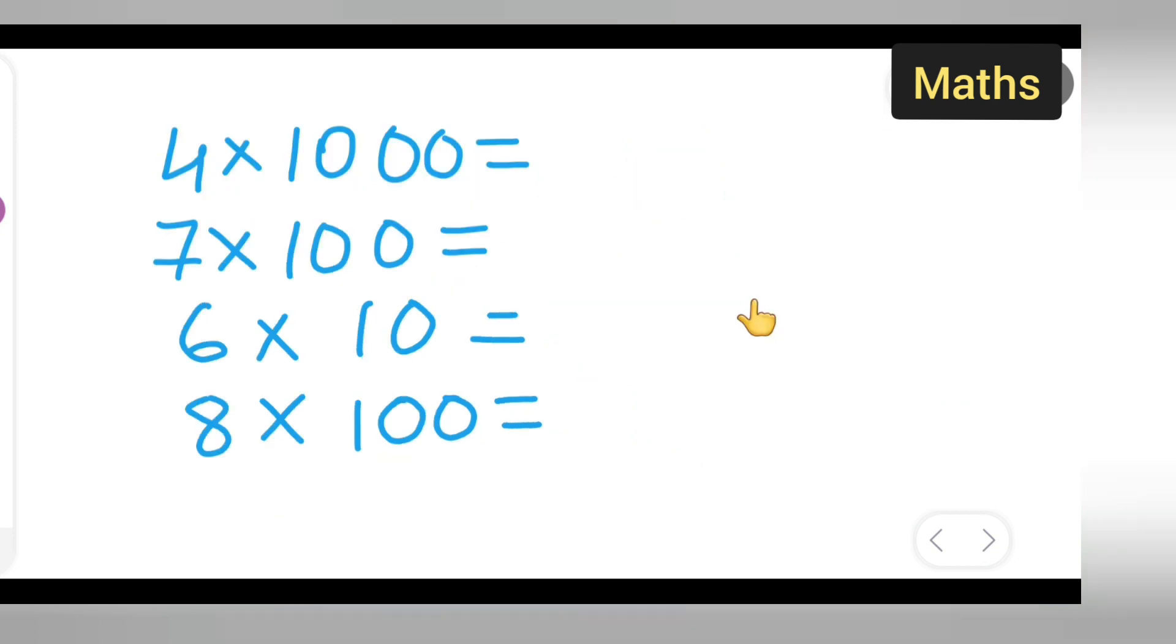Next, let us see what is given over here. 4 into 1000 will give you 4000. Your next number is 7 into 100, which will be 700.